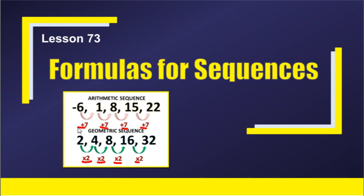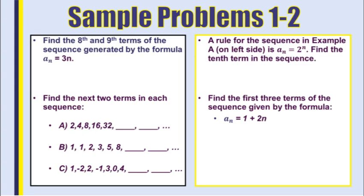Today we want to focus on how to complete a sequence using a formula. In the sample problems, they're going to give us a formula and then we're going to have to find a certain term. It says: find the eighth and ninth terms of the sequence generated by the formula a subscript n equals 3n.